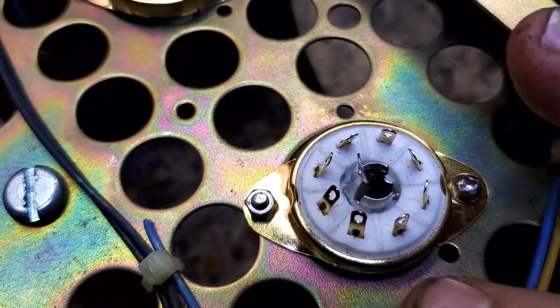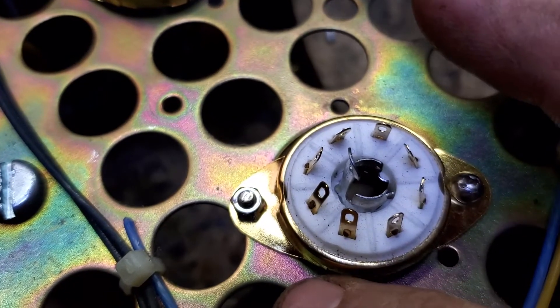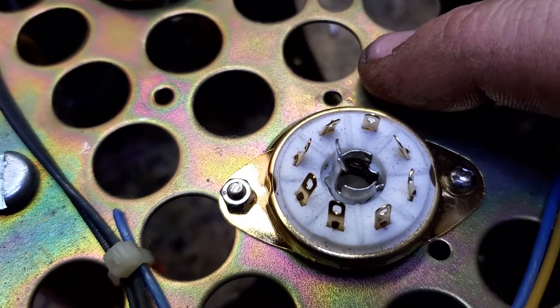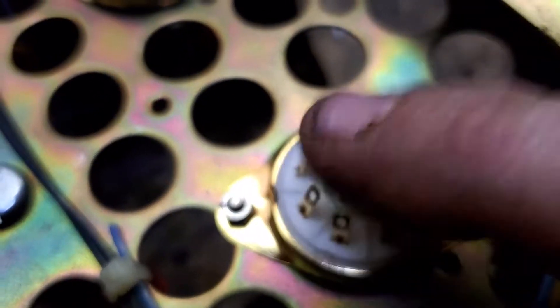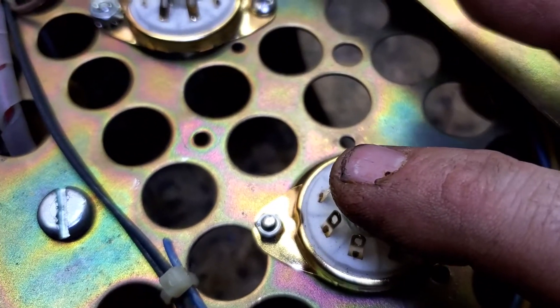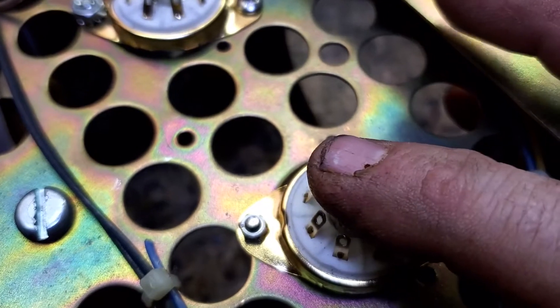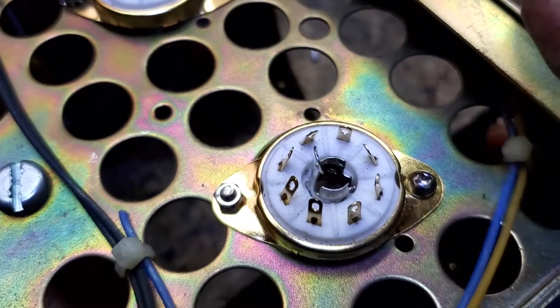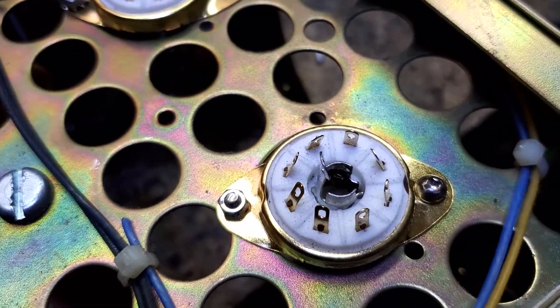All but one are going to ground through a cap, and then one is going directly to ground. Now on this one we're going to feed our negative bias. This is a control grid and here we're going to feed our negative bias heterodyned with our input signal, and that's going to excite the tube.